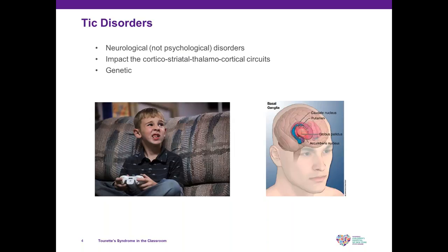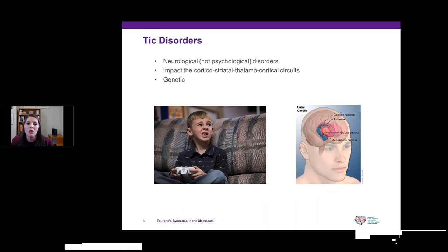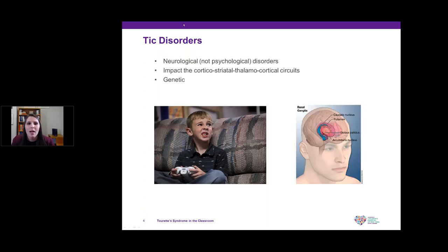So first, what are tics? These are neurological, not psychological disorders, which means they're brain-based, and they impact the cortical-striato-thalamocortical circuits in the brain — that's the part of the brain really controlling our movements. This is not something that is controlled by the child, and it is also genetic in nature, so it can be passed down from parents, and siblings may also have higher occurrences of tics together.